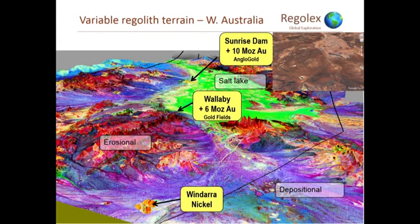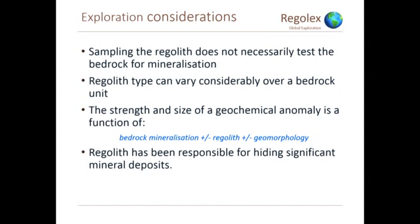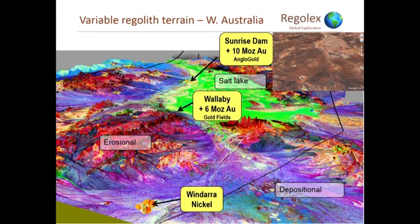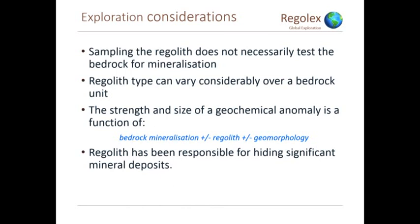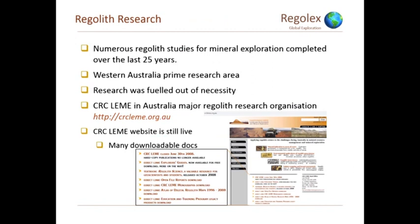If you look at Google Earth on the right, that's how it looks with normal eyes. On the right, I've processed the Landsat and done a decorrelation stretch — bands 4, 5, and 7. It's much more effective than just using natural color in terms of picking out the different material. So sampling the regolith doesn't always test the bedrock for mineralization. Regolith type can vary considerably over a bedrock unit, and the strength and size of a geochemical anomaly is a function of bedrock mineralization, regolith, and geomorphology. There's been a lot of research, particularly during the years of CRC-LEME coming out of CSIRO — Mel was heavily involved. The website is still live; it's a huge repository of information, still available.